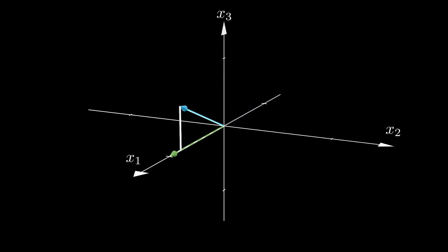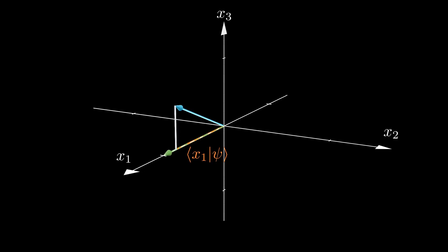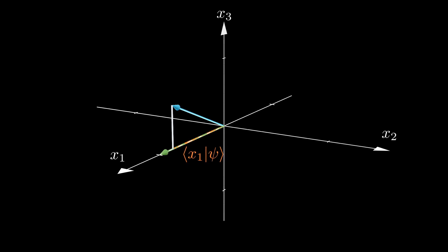The same can be seen in our three dimensional example. The component of our wave function psi along the x1 direction is just the inner product between the x1 basis vector and the wave function vector. Remember that this is an example in three spatial coordinates only, and we have to extend this space to contain an infinite number of orthogonal basis vectors, which is just a little tricky to visualize.